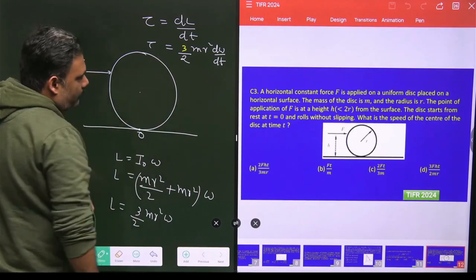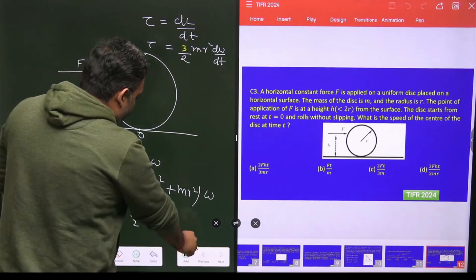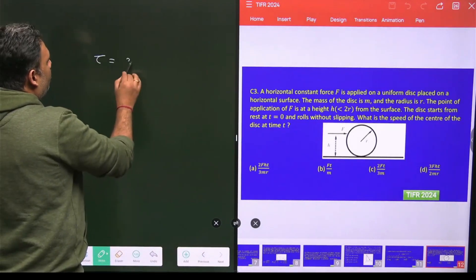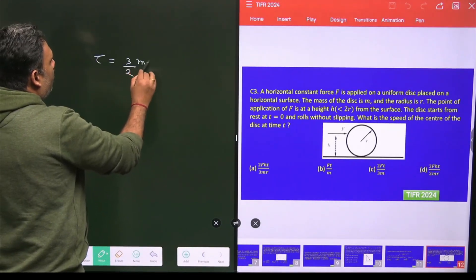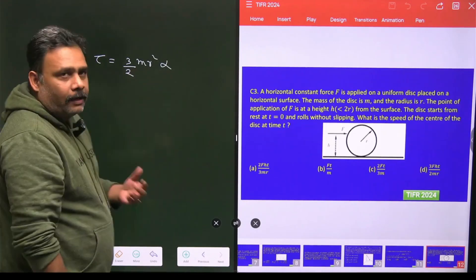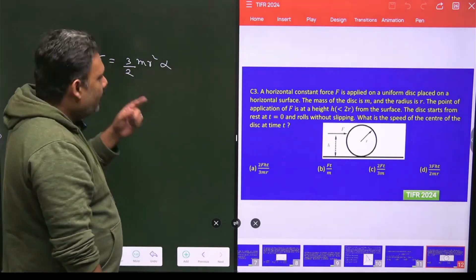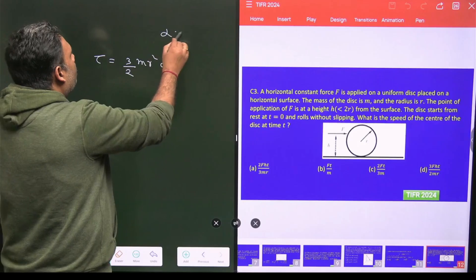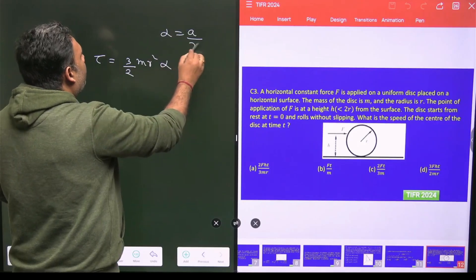And what will happen? This torque equals 3 by 2 mr² d omega upon dt, which is nothing but alpha, the angular acceleration. And hence it is rolling without slipping. Then alpha is equal to A by R.